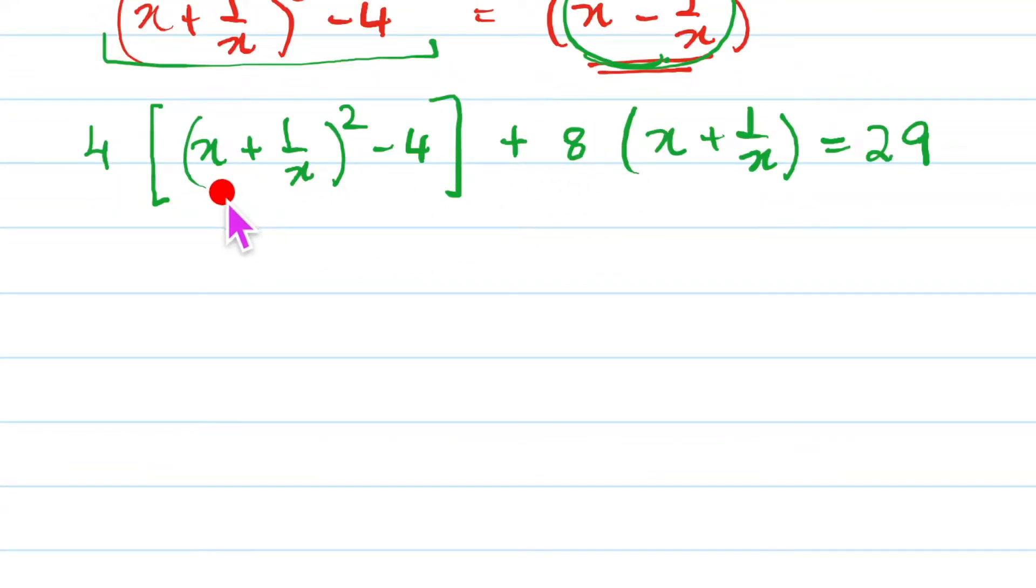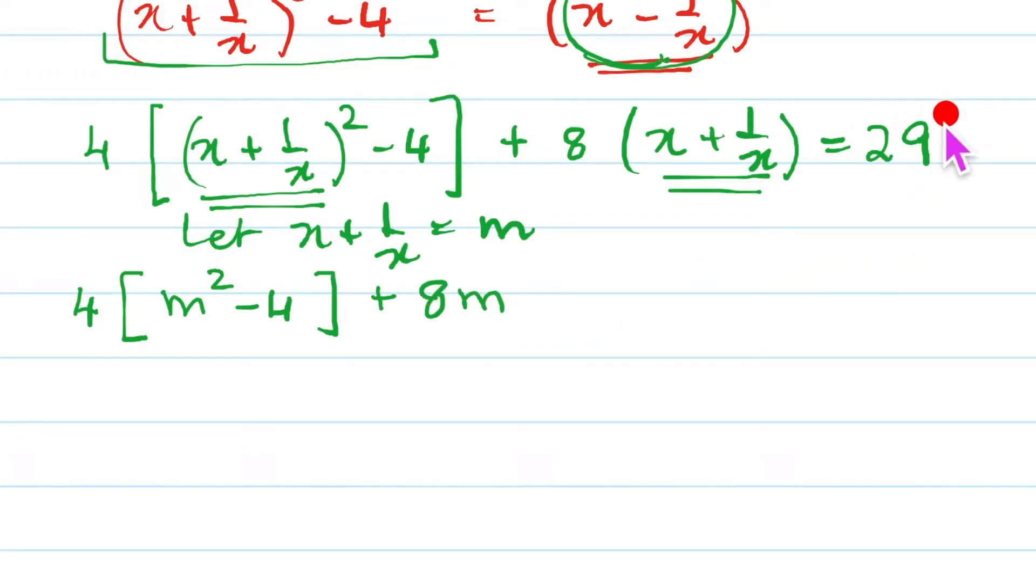So now you are able to see this and can you see this both of them are the same thing. So if I say let x + 1/x equal to m then this whole expression becomes 4(m² - 4) and here it becomes plus 8m and now let us bring this this side so it becomes minus 29 and that's equal to 0.